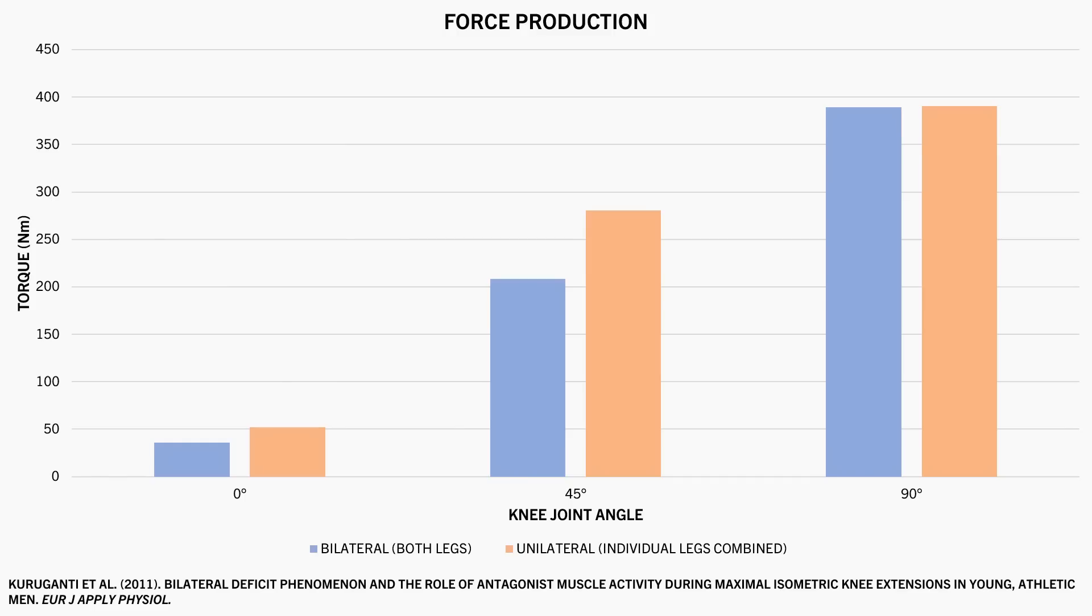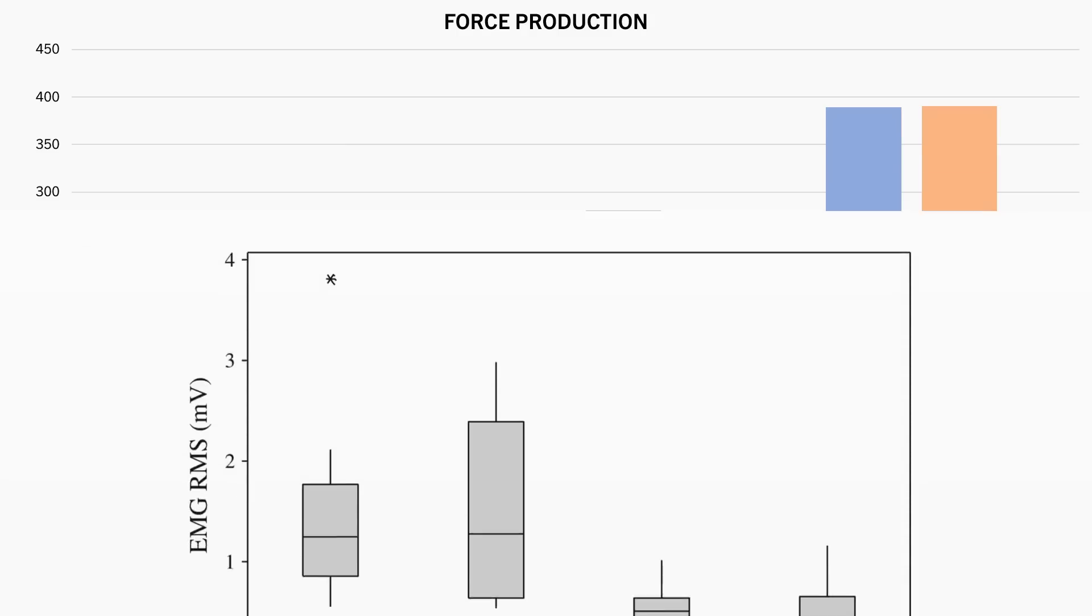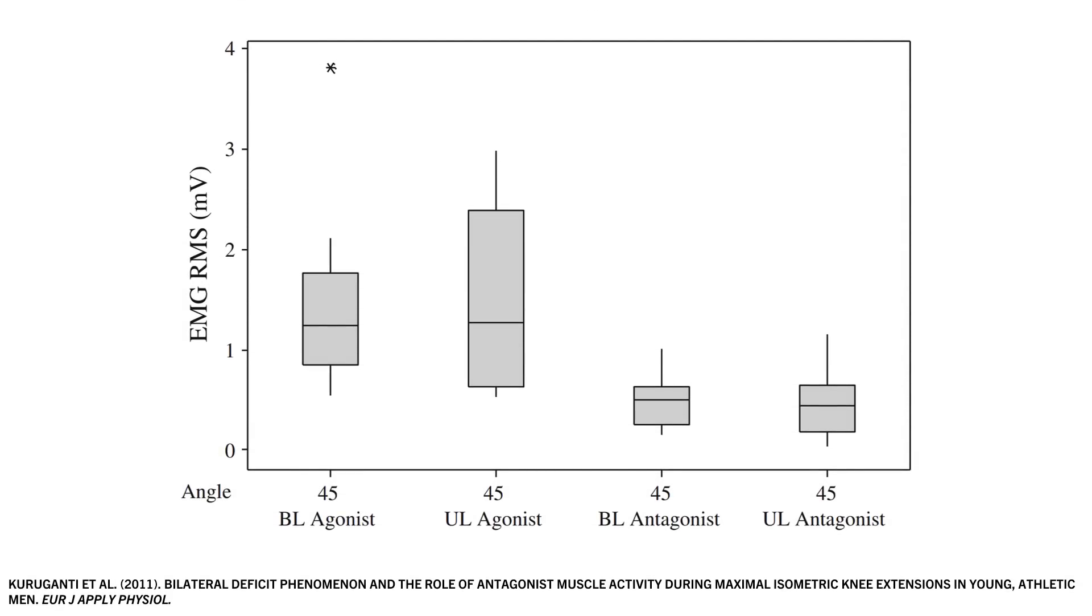As we can see the bilateral deficit was observed with the sum of torque from each leg individually being greater than the total torque produced with both legs together on average across the different knee angles.